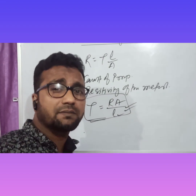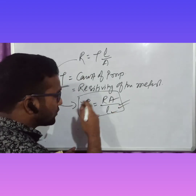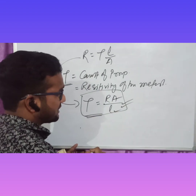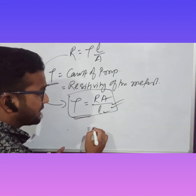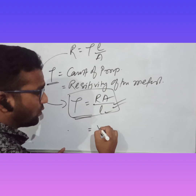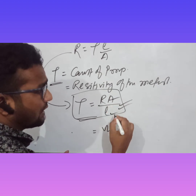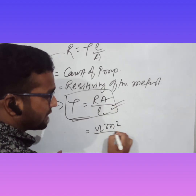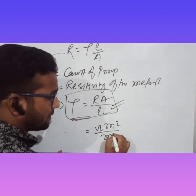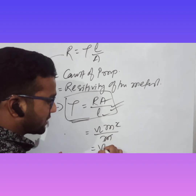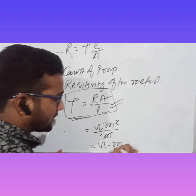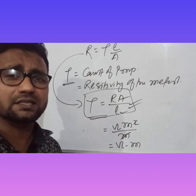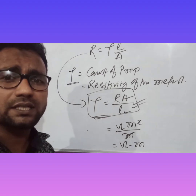For the SI unit of resistivity: from R = ρL/A, rearranging gives ρ = RA/L. The unit of R is ohm, area is metre squared, and length is metre, so the SI unit of resistivity is ohm·metre (Ω·m). Resistivity is also a scalar quantity.